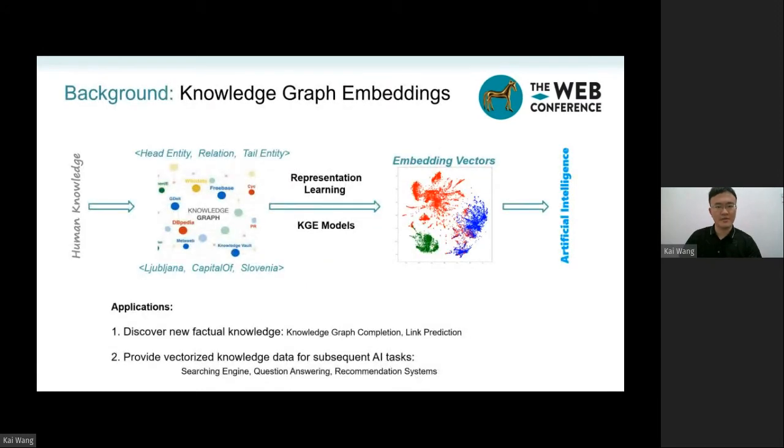At first, let me talk about Knowledge Graph. The Knowledge Graph is proposed to describe the various entities and their relationships existing in the real world or in human common sense. We know that Ljubljana is the capital of Slovenia.